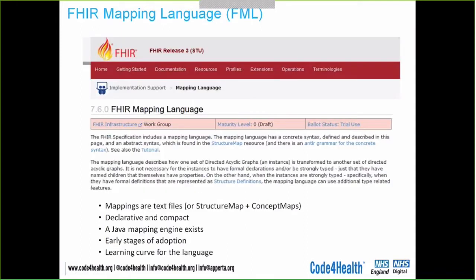The FHIR mapping language is part of the FHIR standard STU3. It is a declarative and quite compact language in which you define mappings between your source and your target. Your source may be something like HL7 version 2, and your target will be some FHIR bundle. Once you define these mappings, the mapping engine — which is part of the FHIR reference implementation — can do the transforms for you. There is a mapping engine that does those transforms.